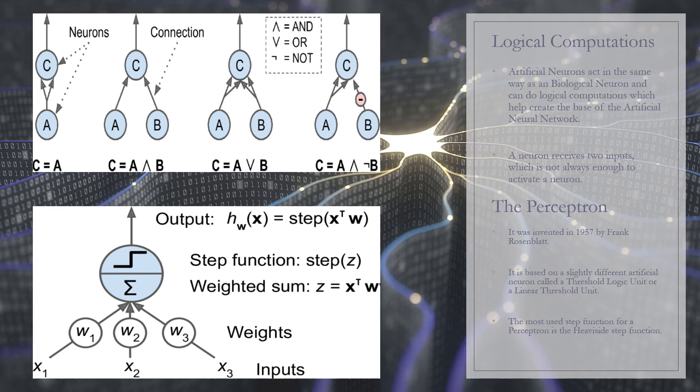As you can see, the inputs and outputs are numbers. Each input is associated with a weight, the sum of which is computed by the threshold logic unit and then has a step function applied to it and outputs the result. The most common step function used in perceptrons is the Heaviside step function.